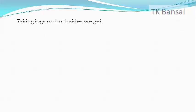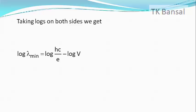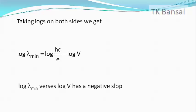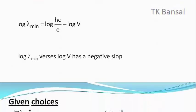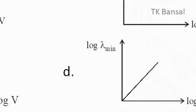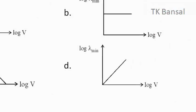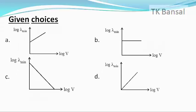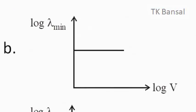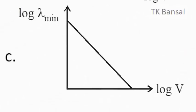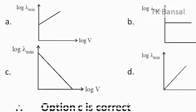Taking logs on both sides, log of λ_min = log(hc/e) − log V. This clearly means that the plot of log λ_min versus log V is a straight line with a negative slope. Option A and option D have a positive slope each, whereas option B has a zero slope. The only graph with a negative slope is option C, and therefore option C is the right answer.